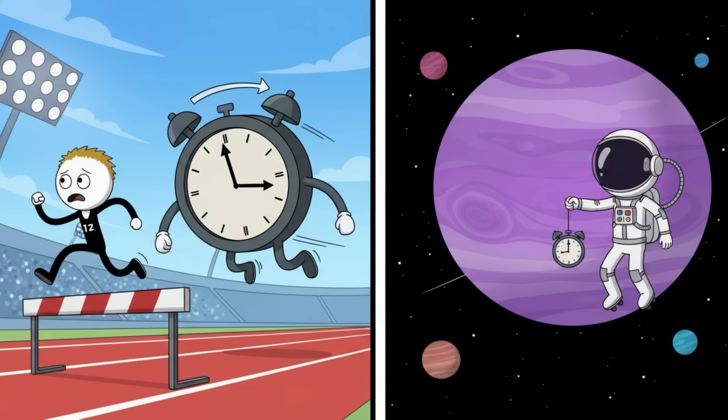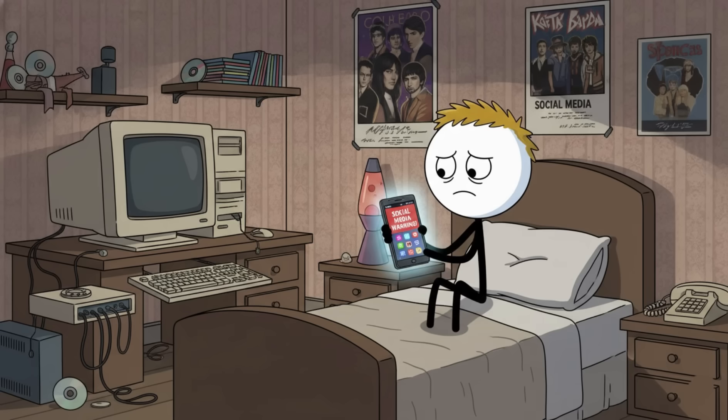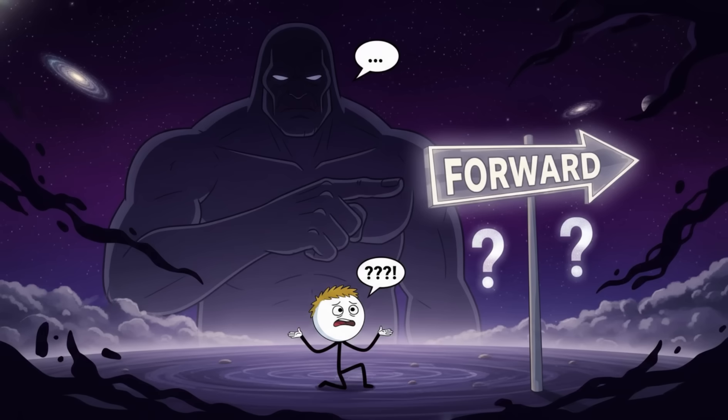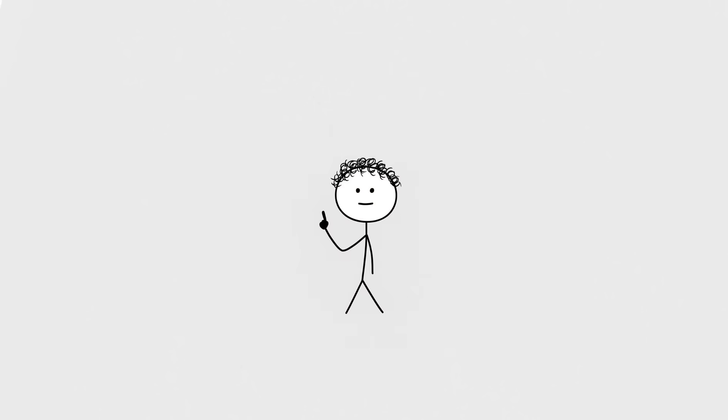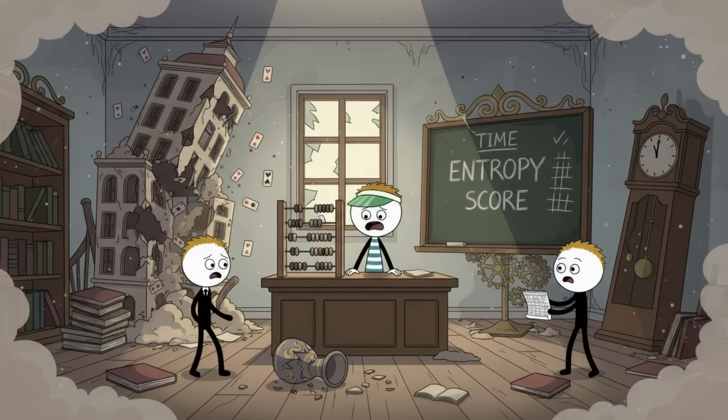But even beyond Einstein's funhouse physics, there's a bigger issue: why does time move forward? Why not backward? Why not sideways? Why can't you wake up tomorrow in 1998 and warn everyone about social media? The universe gives us one direction, forward, but refuses to explain why. Some theorists think time isn't a fundamental part of reality. It might just be something our brains invented to stop the world from feeling like a chaotic slideshow of unrelated events.